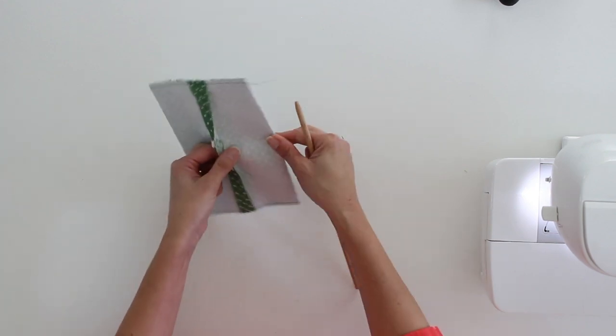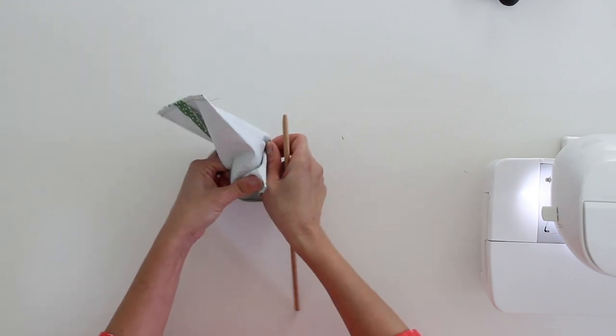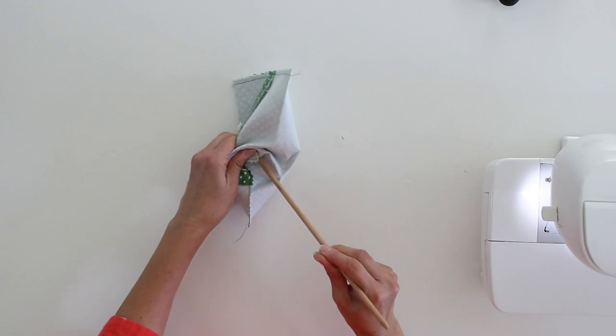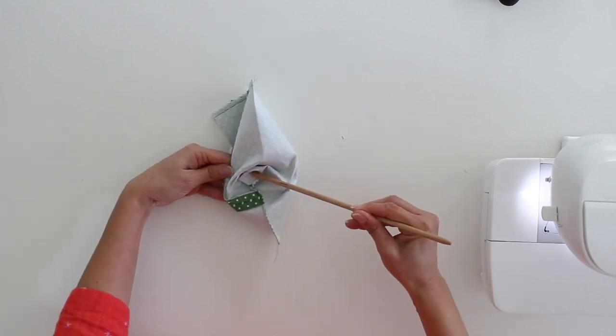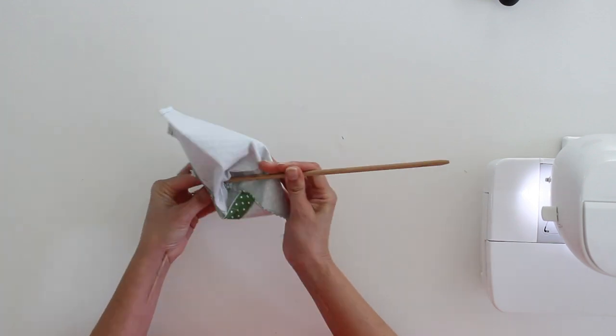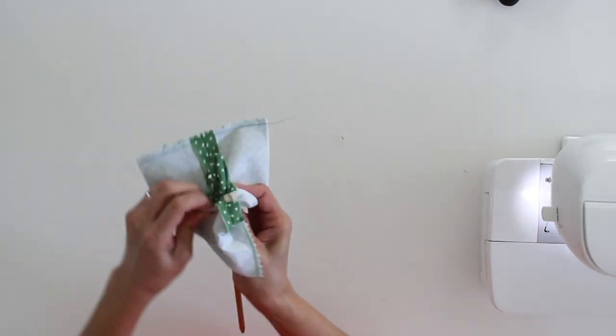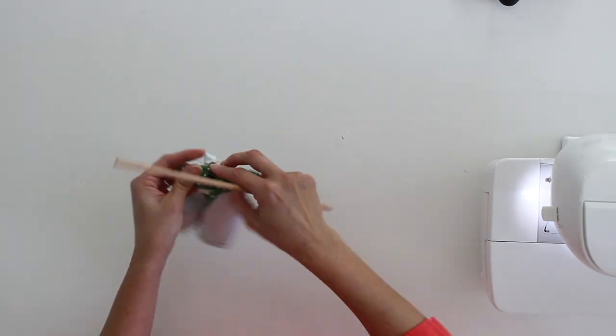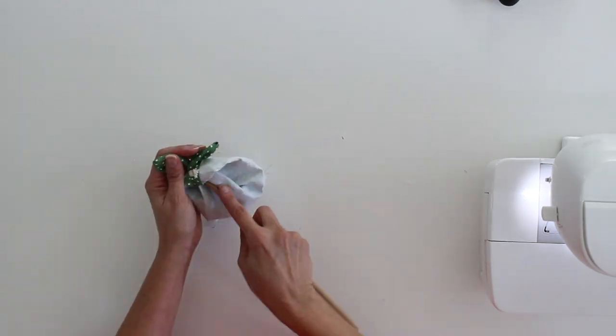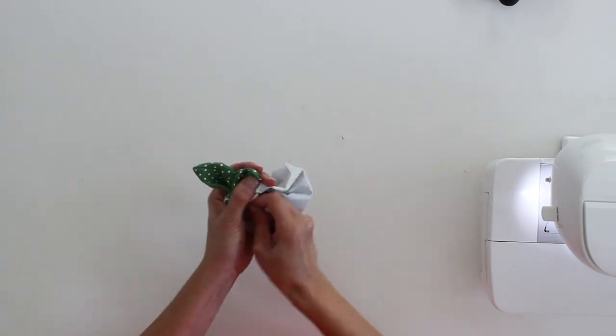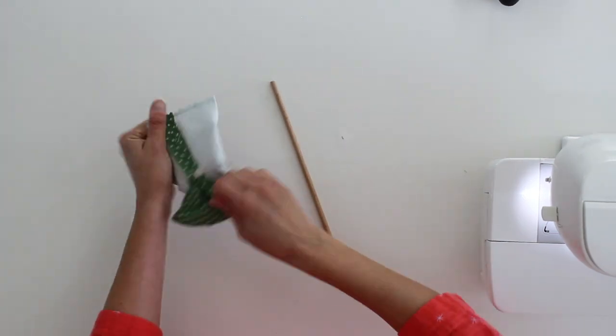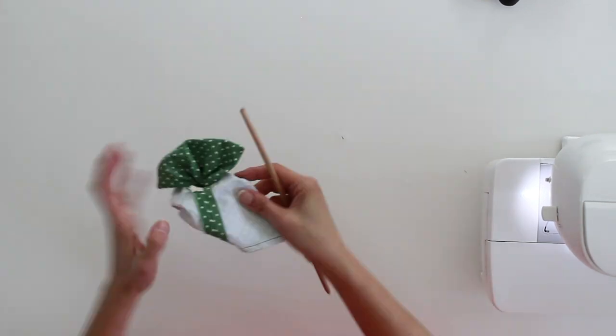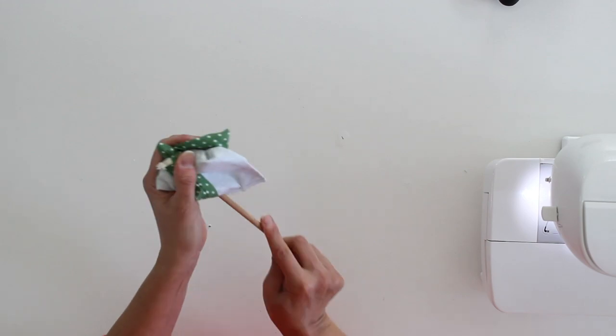Now the hole isn't really big enough for me to stick my fingers through. So what is easier to do is kind of poke the corners through using my stick. You can also use a chopstick to do this. And just go slowly, I'm speeding up this video a lot.